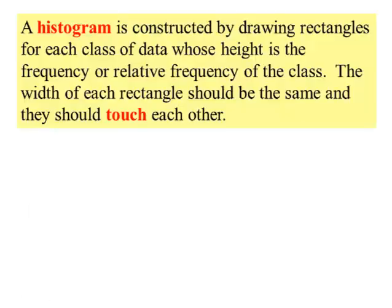Lesson objective number two: Histograms. A histogram is constructed by drawing rectangles, sometimes called bins, for each class of the data whose height is the frequency or it can even be relative frequency of the class. The width of each rectangle should be the same and they should touch each other.